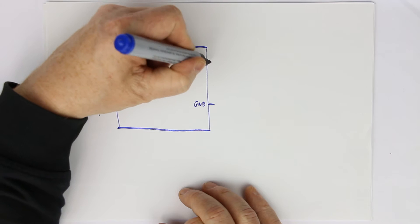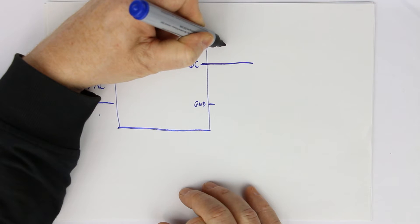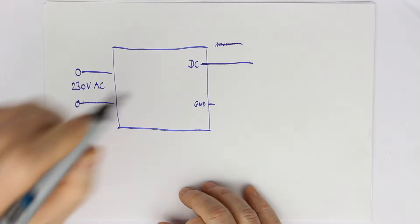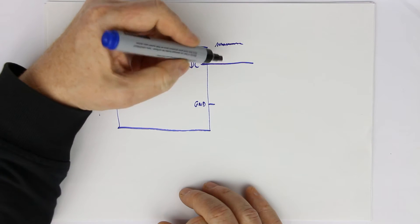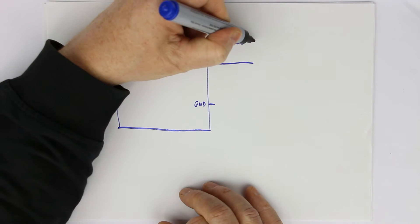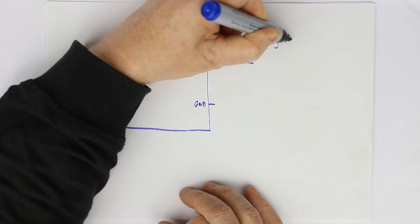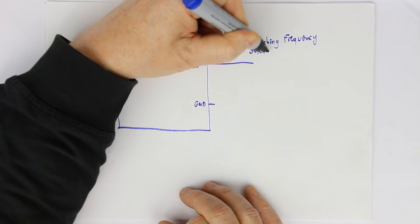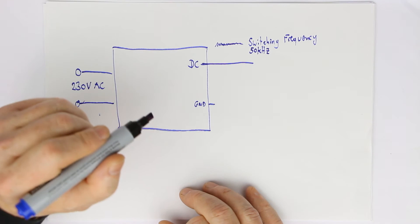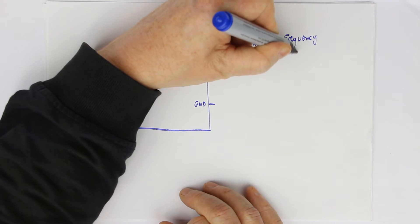The first source of noise is the switching noise from the switching frequency that is superimposed on the DC voltage. The frequency range is the switching frequency, which in today's world is between 50 kilohertz, the lowest you usually get, and more modern switch mode power supplies can go up to 5 megahertz.